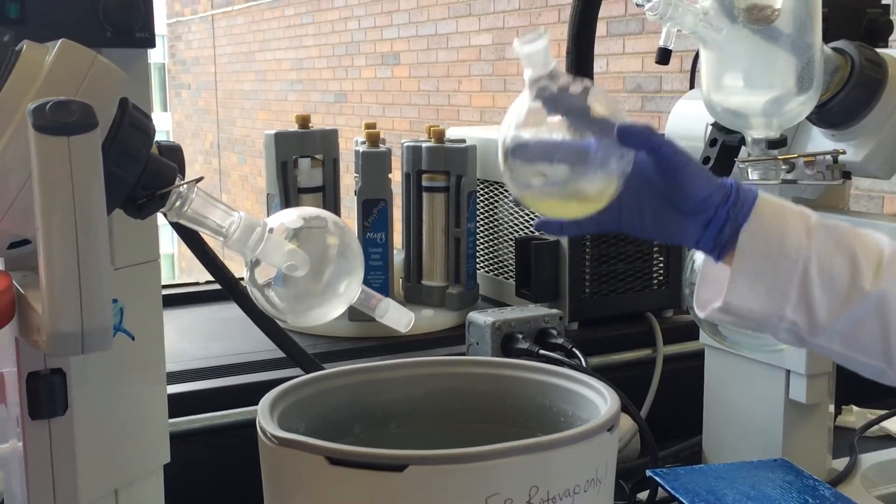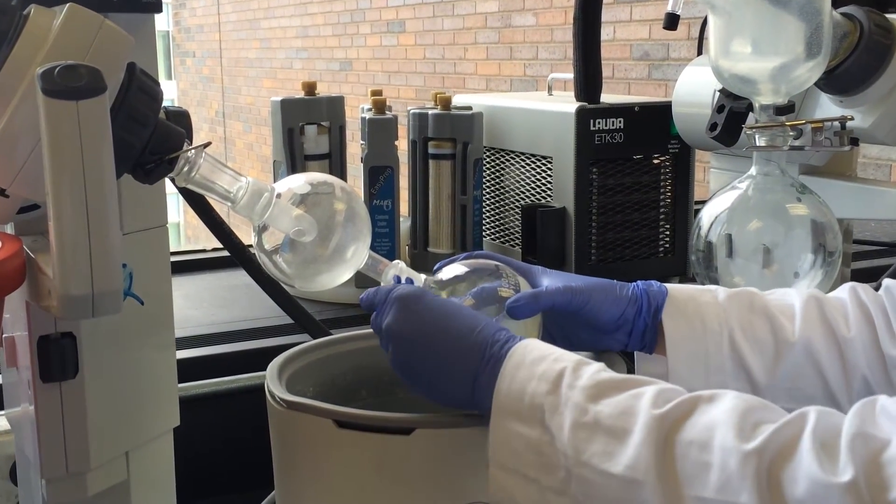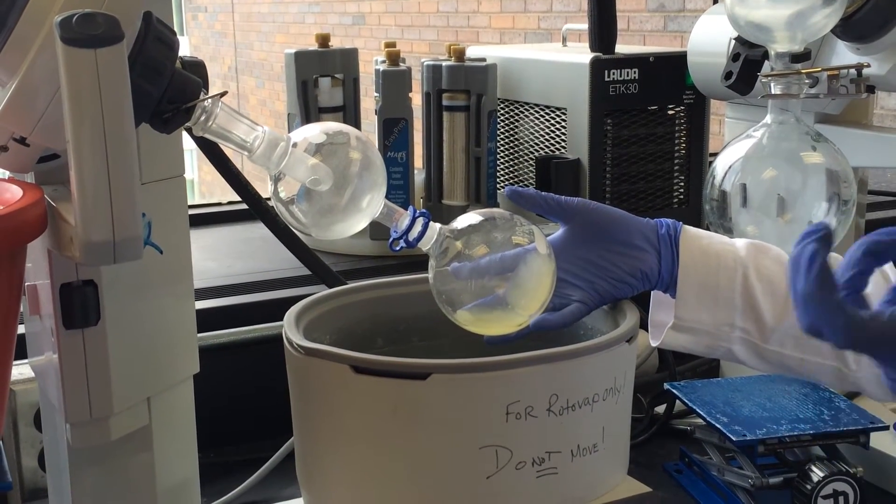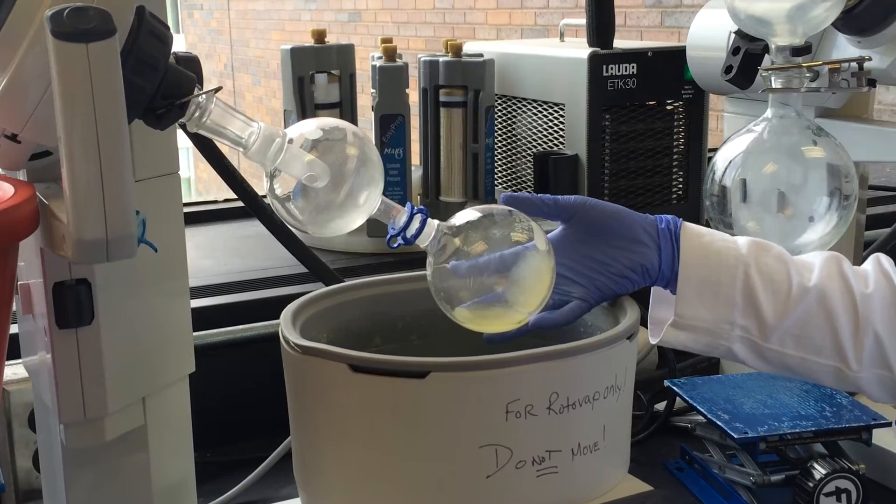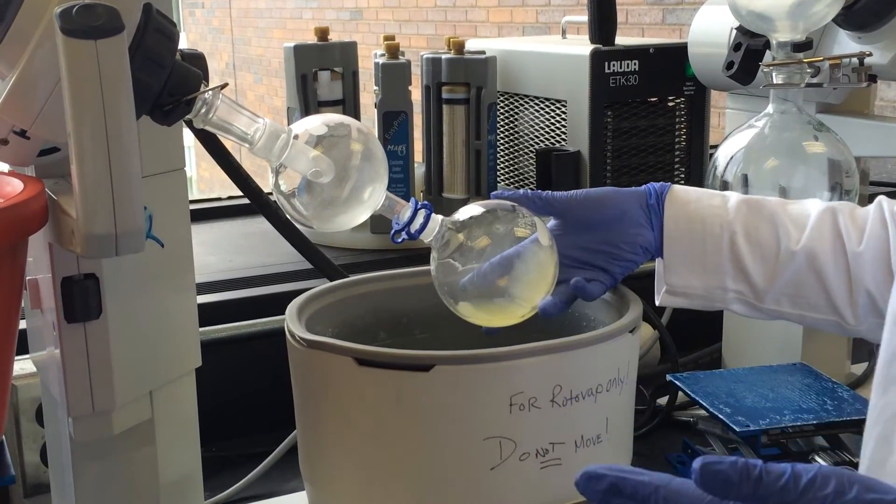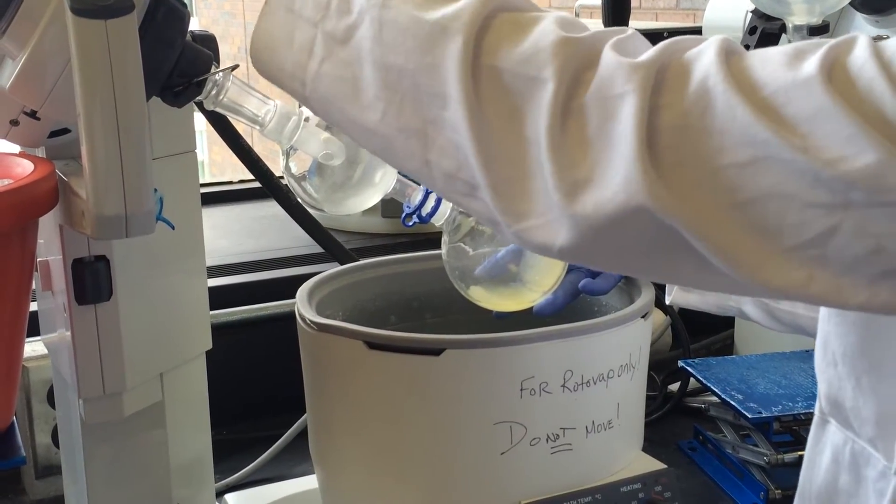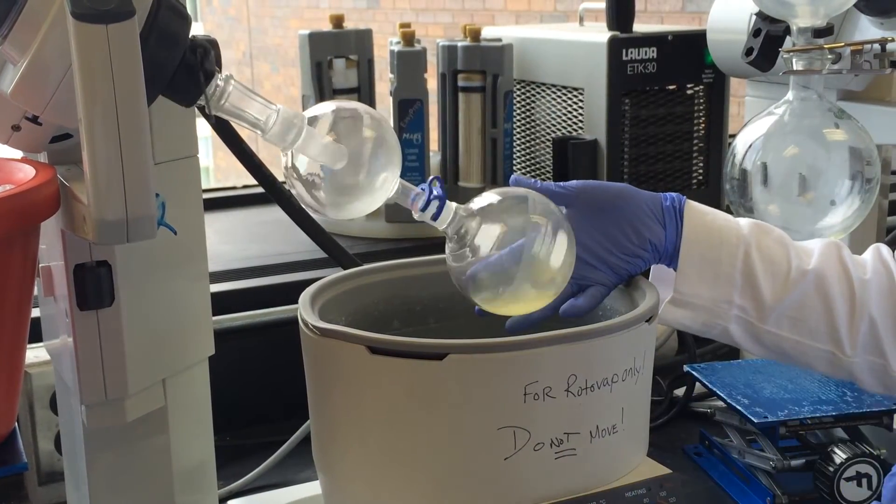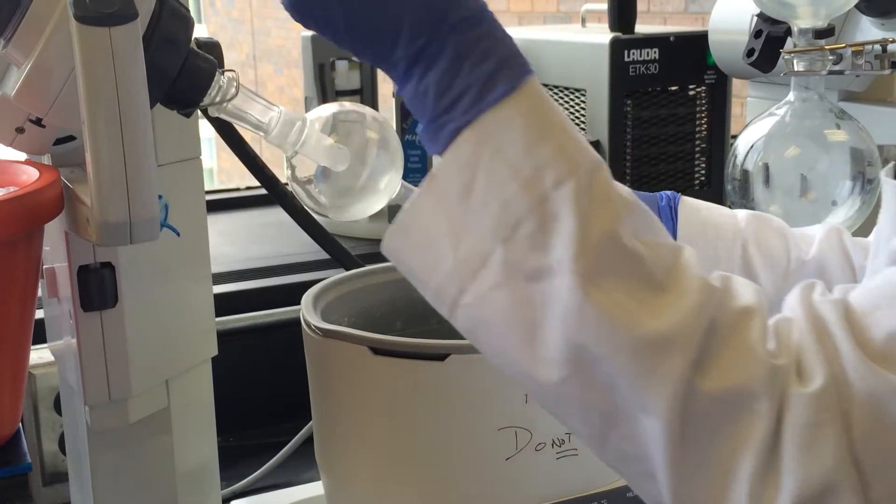Next, we're going to attach our sample to the rotovap to rotovap off the dichloromethane. This allows our sample to adhere to the silica gel. We have a video ready for you where you can learn how to use the rotovap properly.